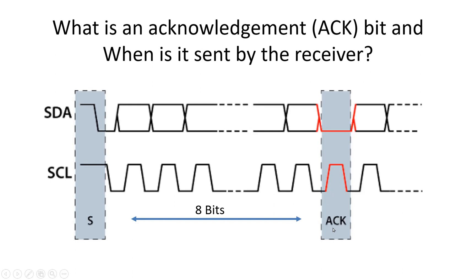But as per I2C protocol, whenever eight bits are transmitted by the transmitter, it should expect an acknowledgement from the receiver. That bit is called an acknowledgement bit. That means an acknowledgement bit is sent in the ninth clock cycle, and during that cycle the transmitter should release the control over the I2C bus and the receiver should make this bit zero.